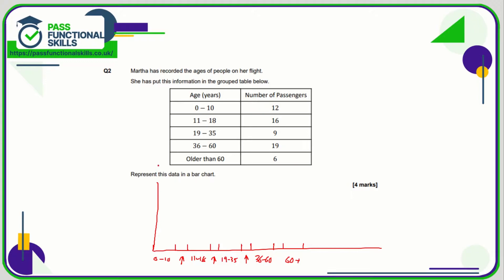For the scale up the side, it would be pointless to go from zero to one hundred when we only need to go as far as nineteen — so I'd probably go up to twenty, marking five, ten, and fifteen. The zero to ten category goes up to twelve, eleven to eighteen goes up to sixteen — just above the fifteen mark. Nineteen to thirty-five is nine, so just below ten, and thirty-six to sixty is nineteen, almost all the way to the top.